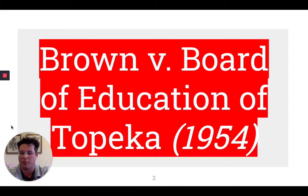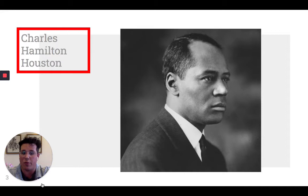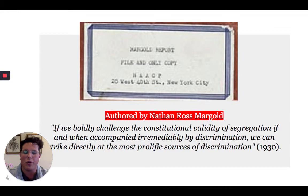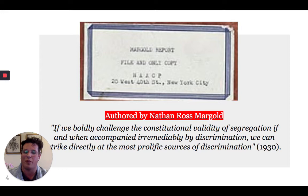Charles Hamilton Houston, the man who killed Jim Crow, was the leader of the NAACP and played a key role in the reversal of the legal framework that Plessy had established. The Margold Report by Nathan Ross Margold suggested attacking segregation through the courts: if we boldly challenged the constitutional validity of segregation, if and when accompanied irremediably by discrimination, we can strike directly at the most prolific sources of discrimination. Specifically, the NAACP would use the courts to challenge whether the equal part of 'separate but equal' really meant equal. Shouldn't the allocation of resources for white education be equal for African American students? They transformed a social issue into an economic one.